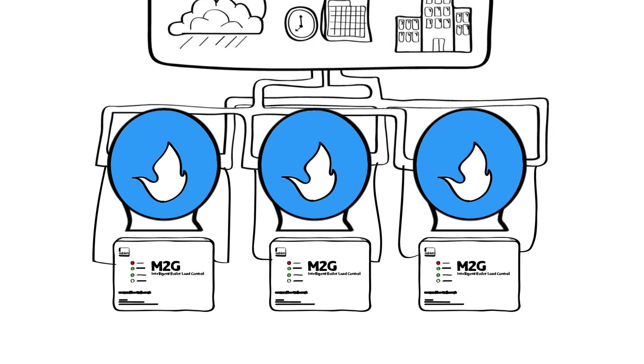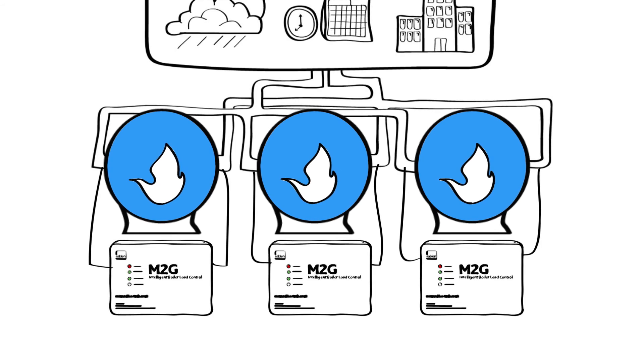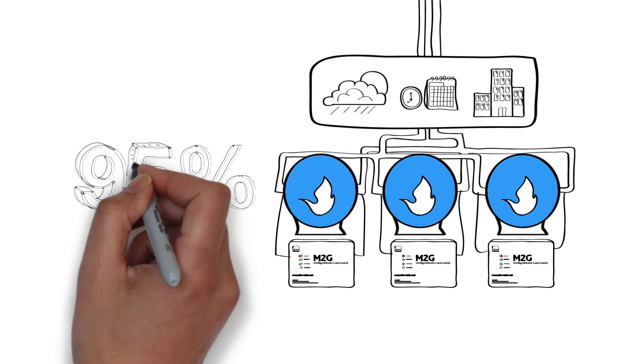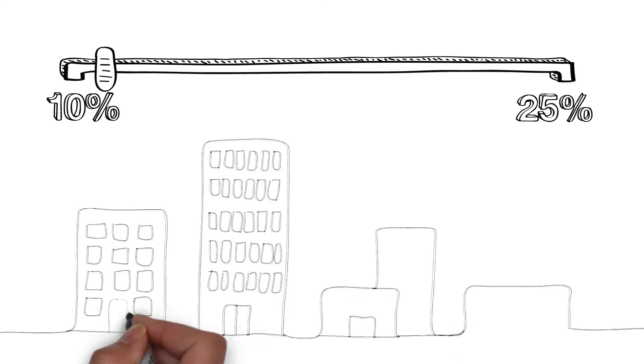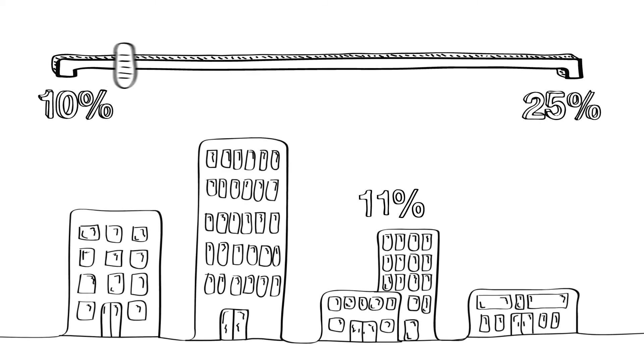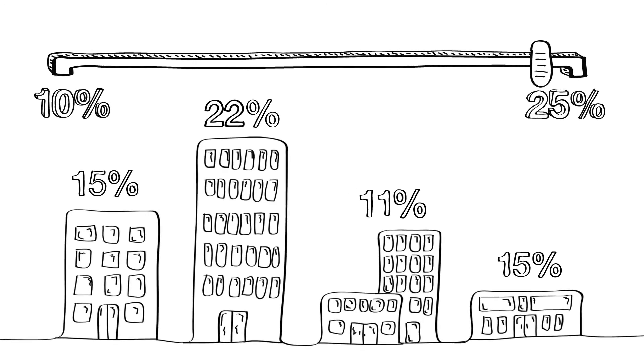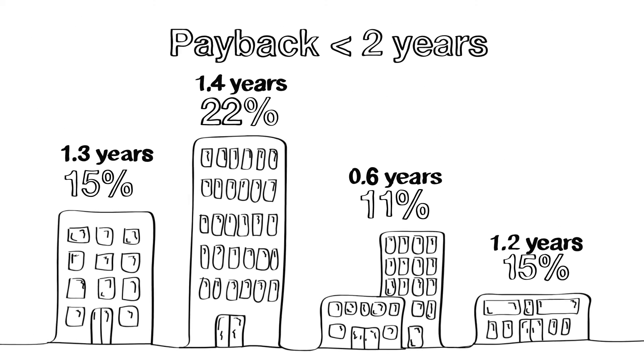What you might not realize is that BMS systems and M2G work brilliantly side by side. In fact, up to 95% of our users install M2Gs alongside their existing BMS systems. And where an M2G is in place, users typically experience energy cost reductions of 10 to 25% across their organization, with a typical payback period of less than two years.